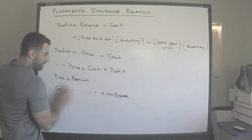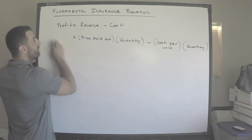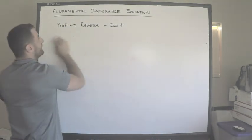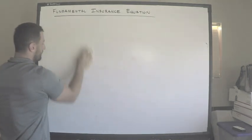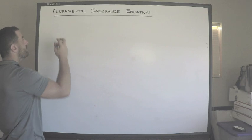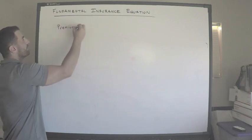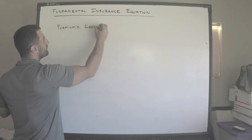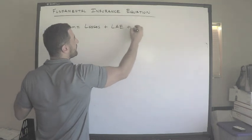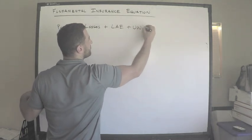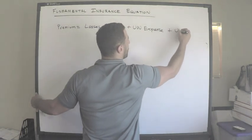So let's rewrite the insurance equation given all of this. The premium is equal to the losses plus the loss adjustment expense, plus the underwriting expense, plus the underwriting profit.